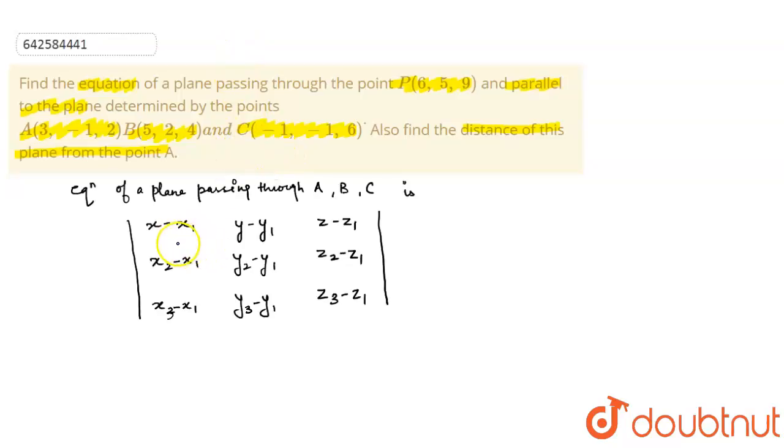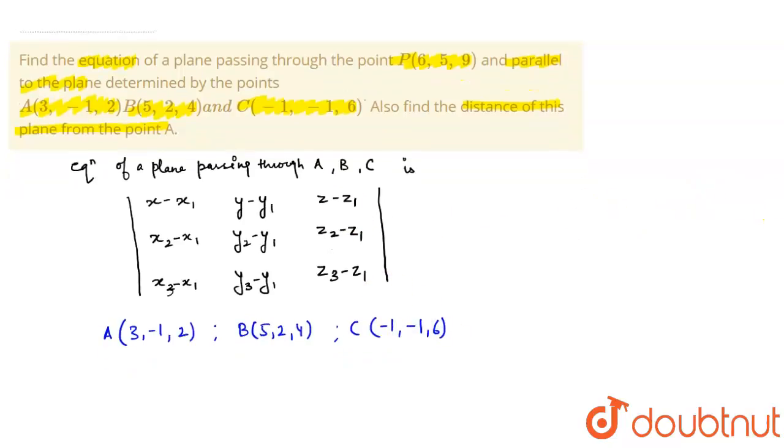So now A is what? 3,-1,2. B is 5,2,4. C is -1,-1,6. Correct? So let's plug in the values.